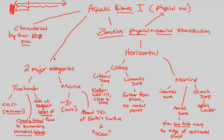So far in aquatic biomes, we know that the physical environment is a key characteristic. The two major categories are freshwater and marine, and we've established some horizontal zones within lakes and marine environments. We'll continue looking at zonation in the next video on aquatic biomes.